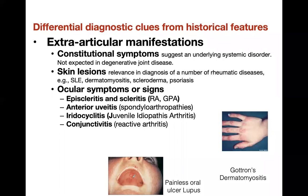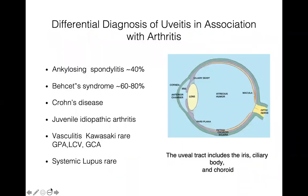If you're suspecting lupus, check for a painless oral ulcer — remember, painless. If you have a patient with uveitis, you really want to check them for rheumatic disease such as ankylosing spondylitis, Behçet's, Crohn's, juvenile idiopathic arthritis, various vasculitides, granulomatous polyangiitis, and giant cell arteritis — it's rare in lupus.